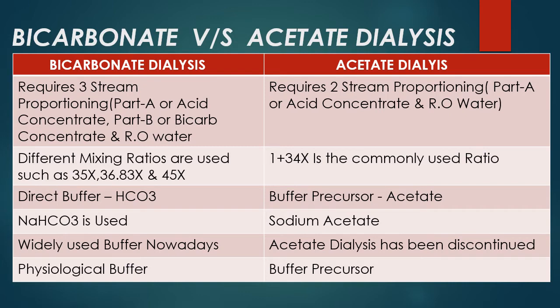The commonly used mixing ratio for bicarbonate dialysis is 36.83X. That means the machine will consume one part of acid, 1.83 parts of bicarbonate, and 34.83 parts of RO water, giving an overall ratio of 36.83. For the acetate mixing ratio of 1+34, one part acetate is used and the remaining 34 parts are RO water.